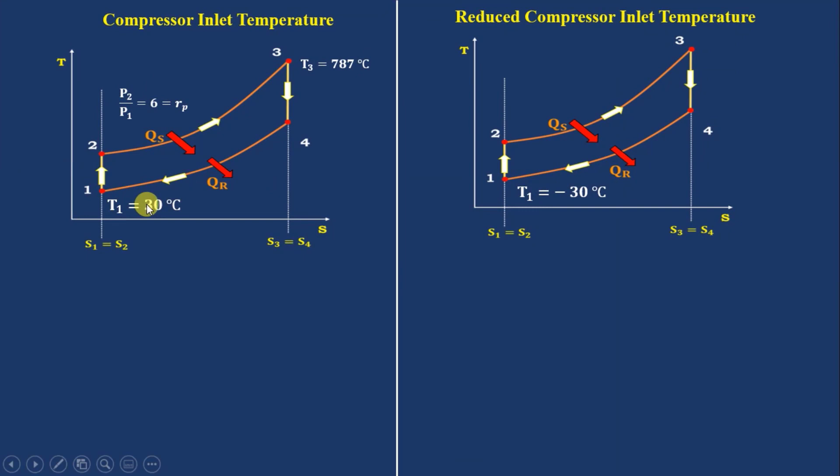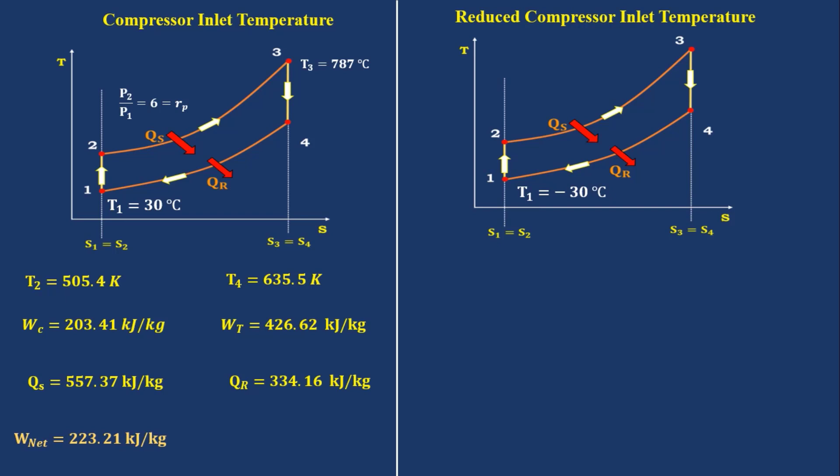For this case, when the ambient temperature is 30 degrees Celsius, we found out T2, T4, similarly compressor work, turbine work, heat addition, heat rejection, also W net and efficiency. All these parameters we have solved already from this playlist. Kindly go through it. Now we will see when our ambient temperature is minus 30 degrees Celsius.